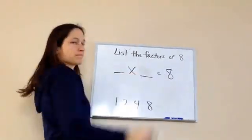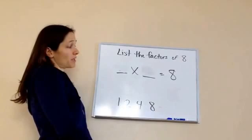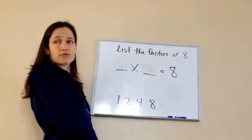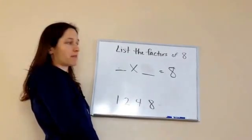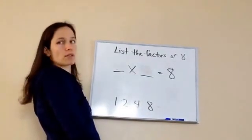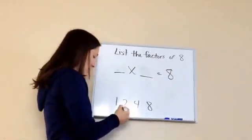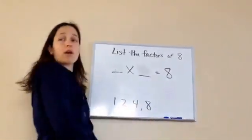Does three times something equal eight? No. Four times something equal eight? Yes, four and two, which we've already got. Five times something equal eight? No. Six times something? No. Seven times something? No. Eight times something? Eight times one, which we already got. So the factors of eight are one, two, four, and eight.